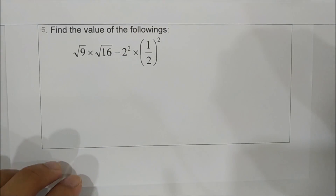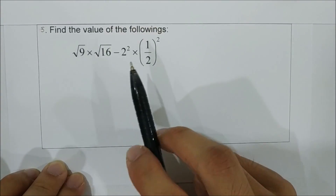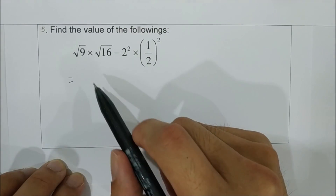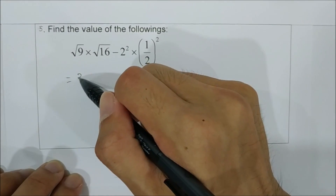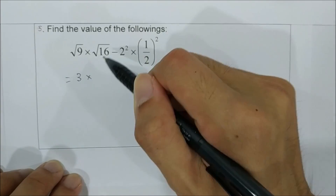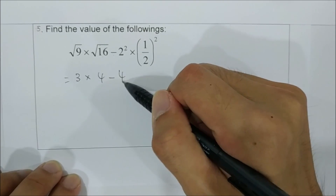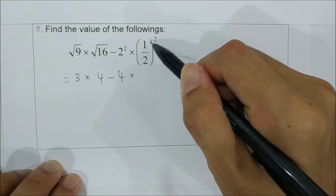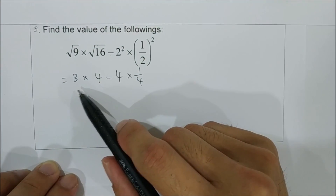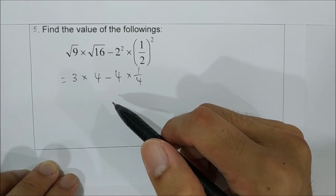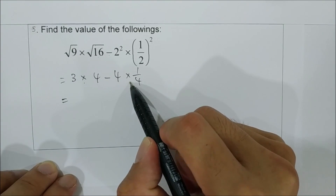Question 5: find the values of the following — a mixed operation involving square root and squared numbers. Start by finding the values of each individual term: square root of 9 is 3, multiply by square root of 16 which is 4, minus the square root of 1/4 which is 1/2. After finding the values of all terms, use the BODMAS rule, starting with multiplication from left to right.